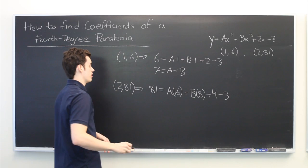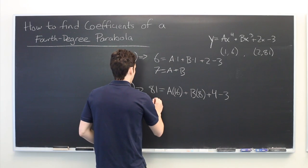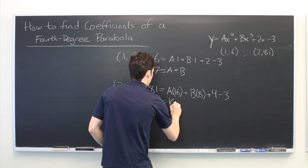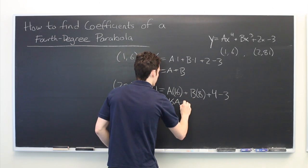And again, we can simplify this a little bit. We get eighty equals sixteen a plus eight b.